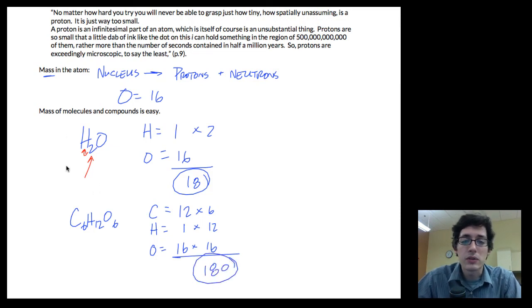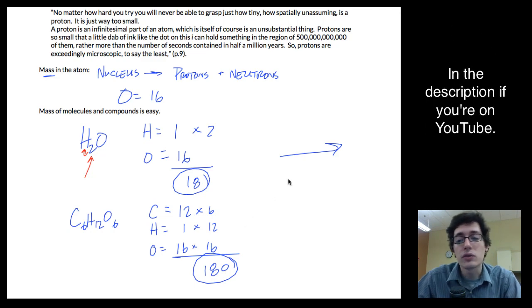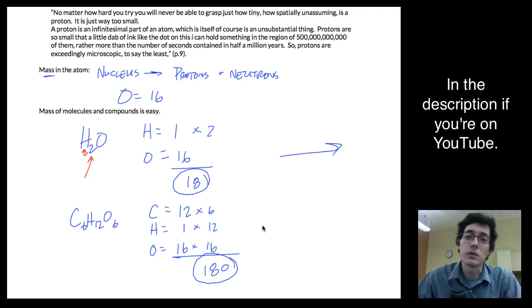So molecules and compounds are easy. Just add up your elements times the number of each of those elements. So some CTQs over on the right of your screen, so you can take a look at those. And we will see you in the next video.